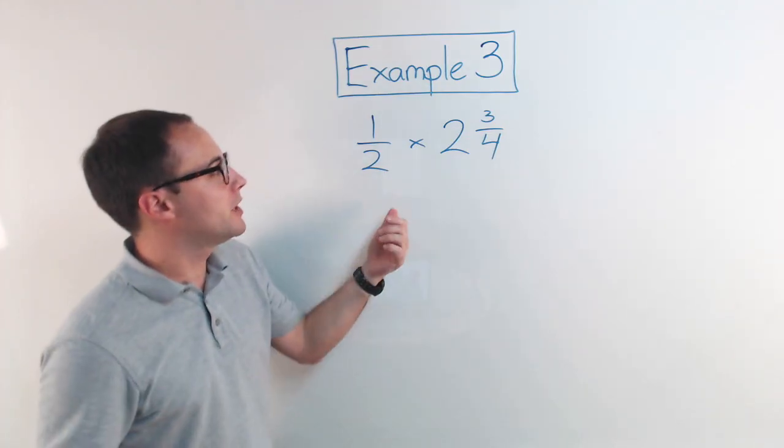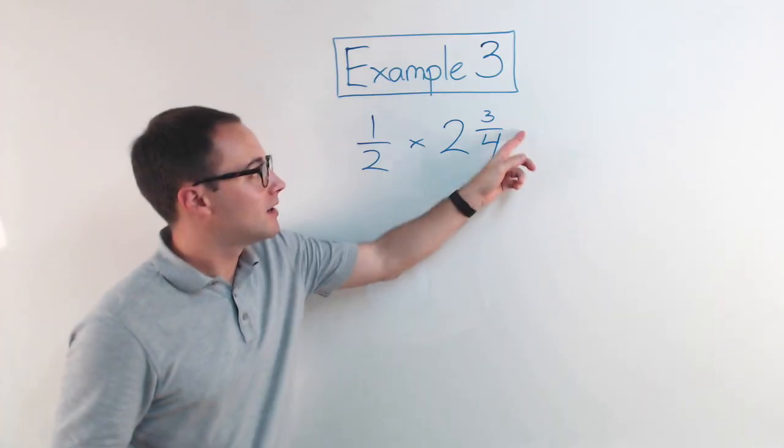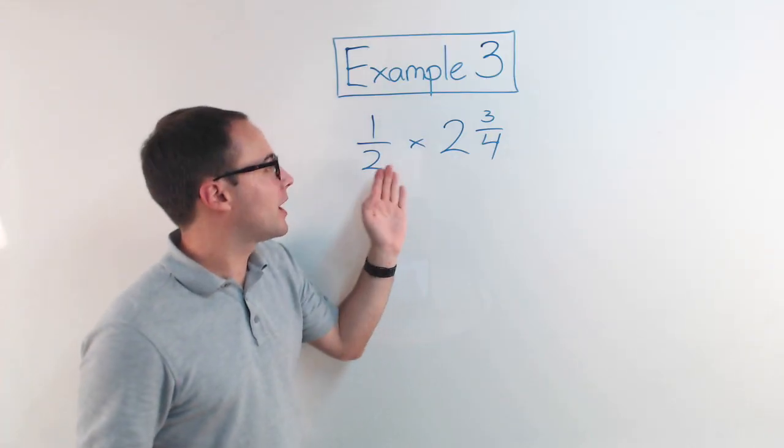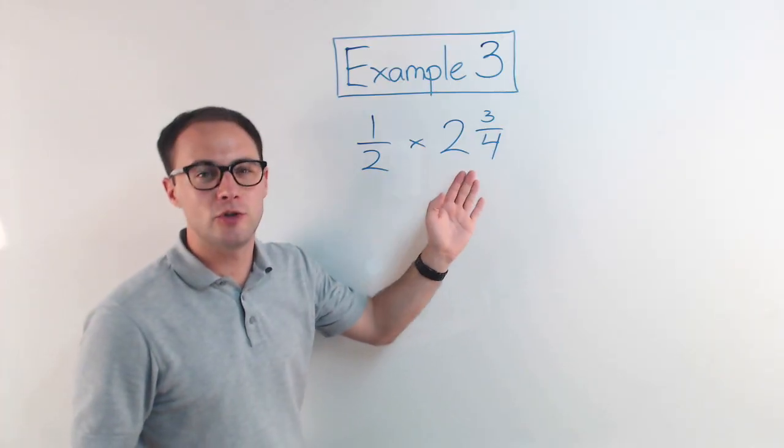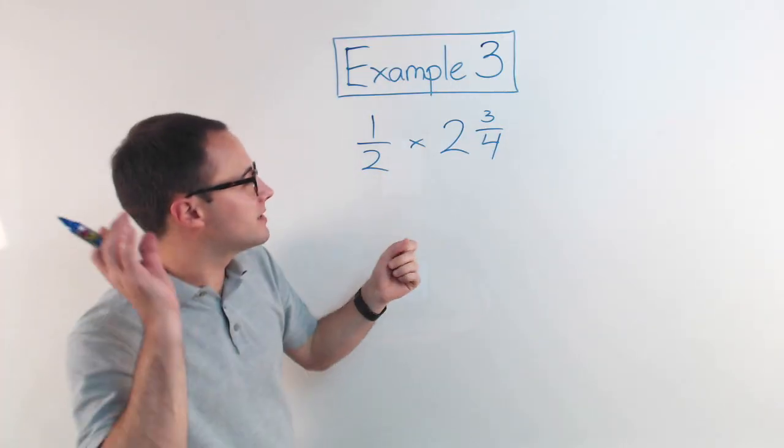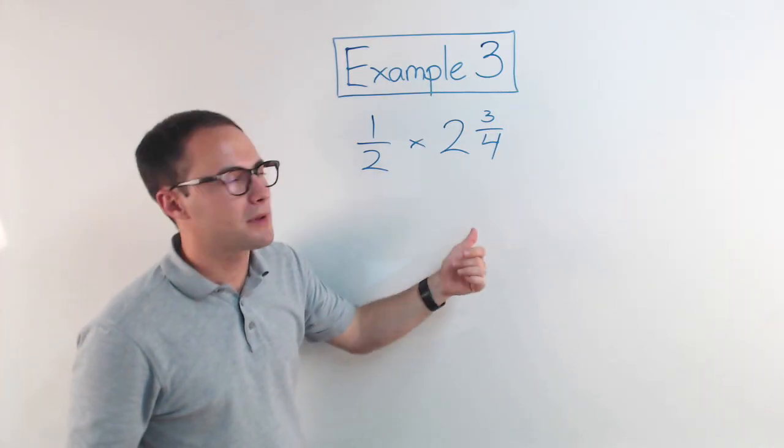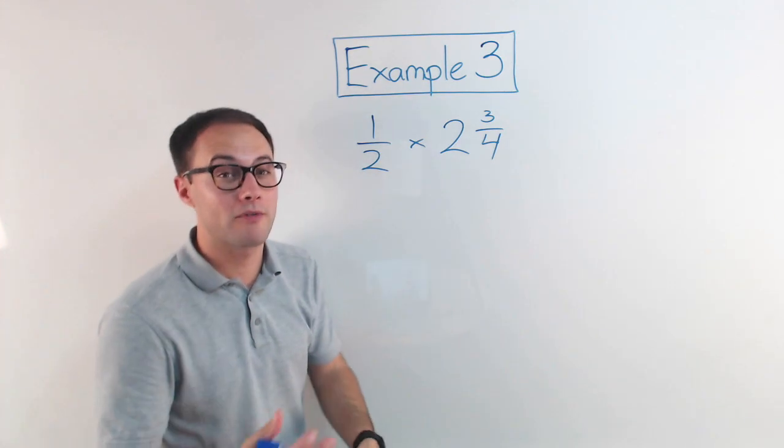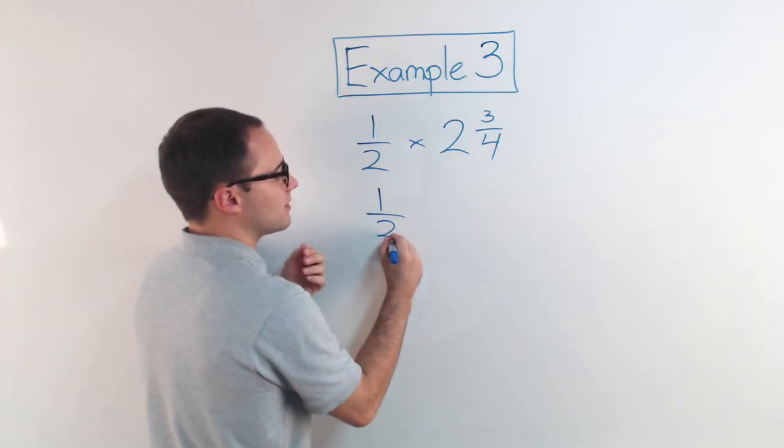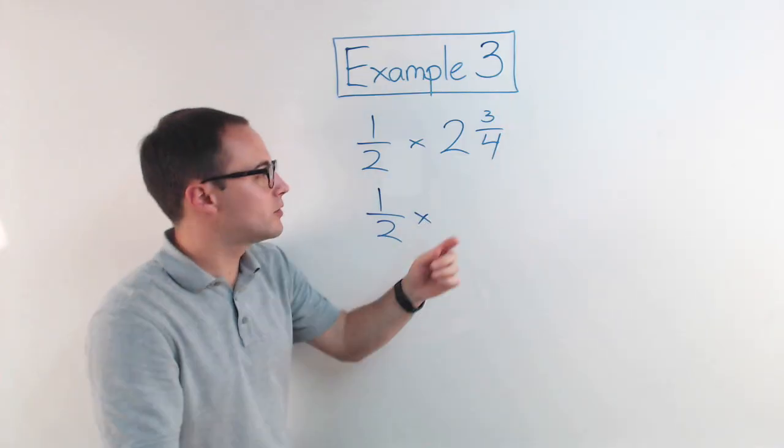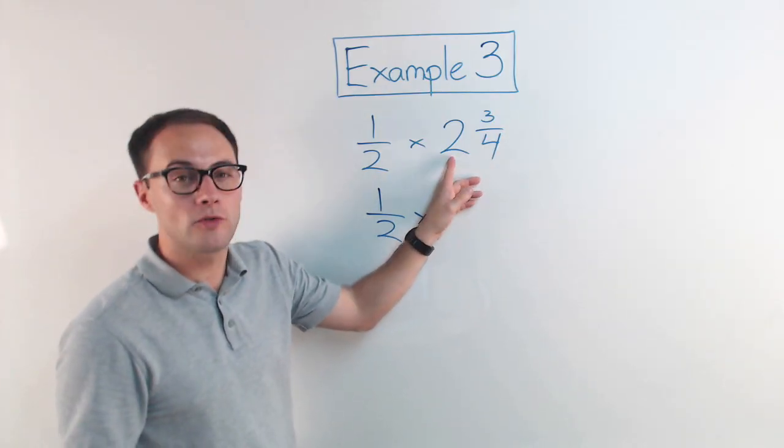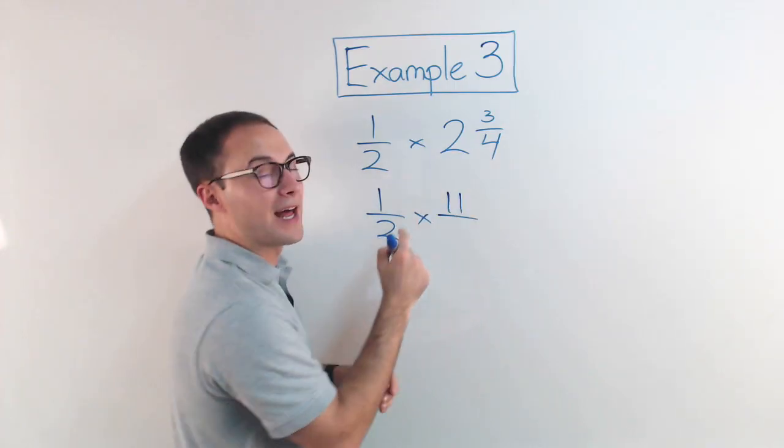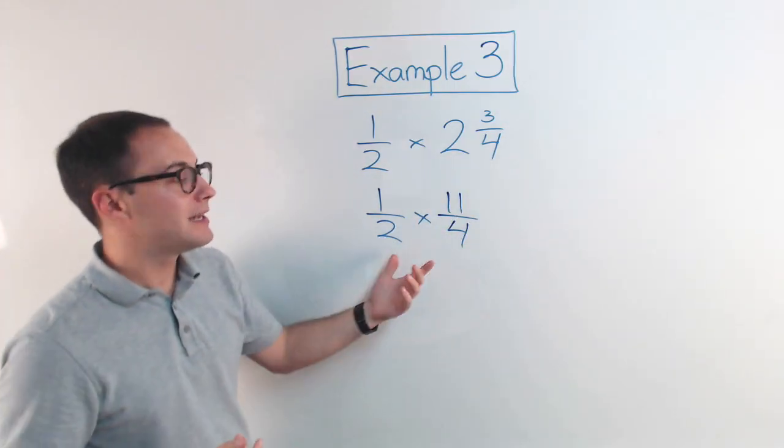All right, here's our last example. Example three. One-half times two and three-fourths. Now two and three-fourths is a mixed number. So what you want to do first is anytime you're multiplying fractions with mixed numbers or mixed numbers with mixed numbers, change it to an improper fraction. And the reason is you could leave it like this, but it's going to be much more complicated. You have to use the distributive property and it's kind of a pain. So just trust me, change it to an improper fraction first. So one-half times two and three-fourths. If you remember how to convert it to an improper fraction, I just do numerator times the whole number. So four times two is eight. Plus the numerator is eleven. The denominator stays the same. That becomes eleven-fourths. Now I'm ready to go.